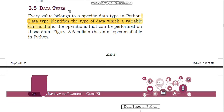Data types. Every value belongs to a specific data type in Python. All the variables or constants you use in the program are of different types — like string type, number type, alphanumeric type. Data type identifies the type of data which a variable can hold and the operations that can be performed on those data. For example, if the data is a number you can perform addition, subtraction, but you cannot do the same with strings.